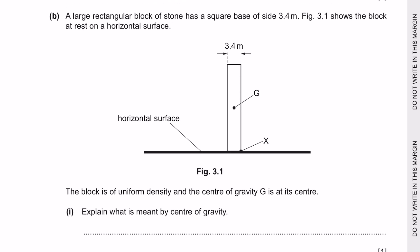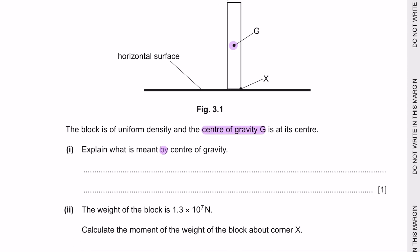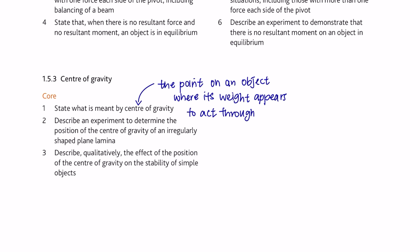Question part B: a large rectangular block of stone has a square base of side 3.4 metres. The block is of uniform density and the centre of gravity G is at its centre. Part 1: explain what is meant by centre of gravity. The centre of gravity is the point on an object where its weight appears to act. You can add this to your syllabus notes for future reference.